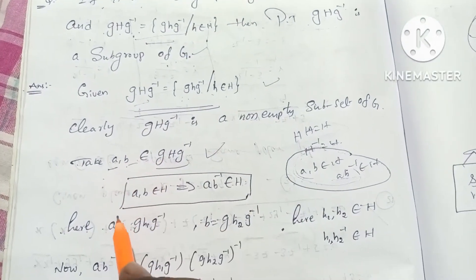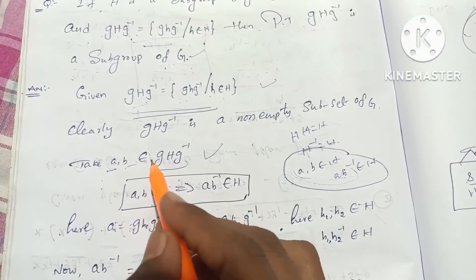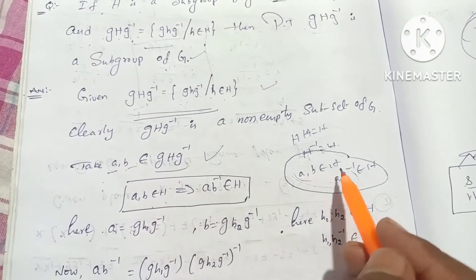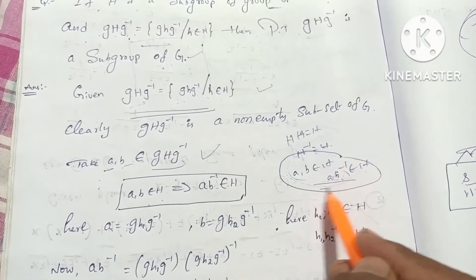We will bring in A and B values. We will prove A, B belongs to H, and we will prove A·B⁻¹ belongs to H.